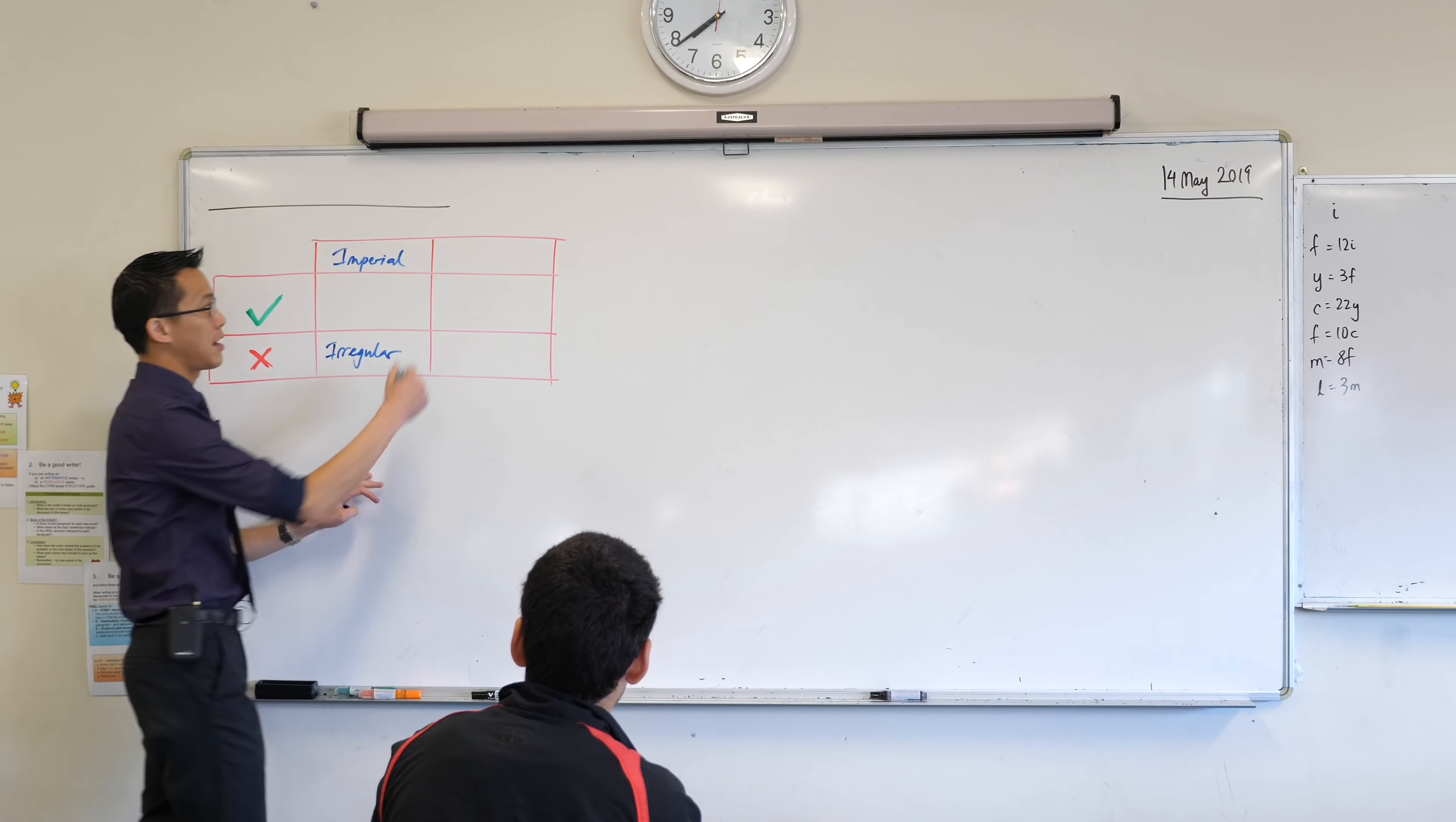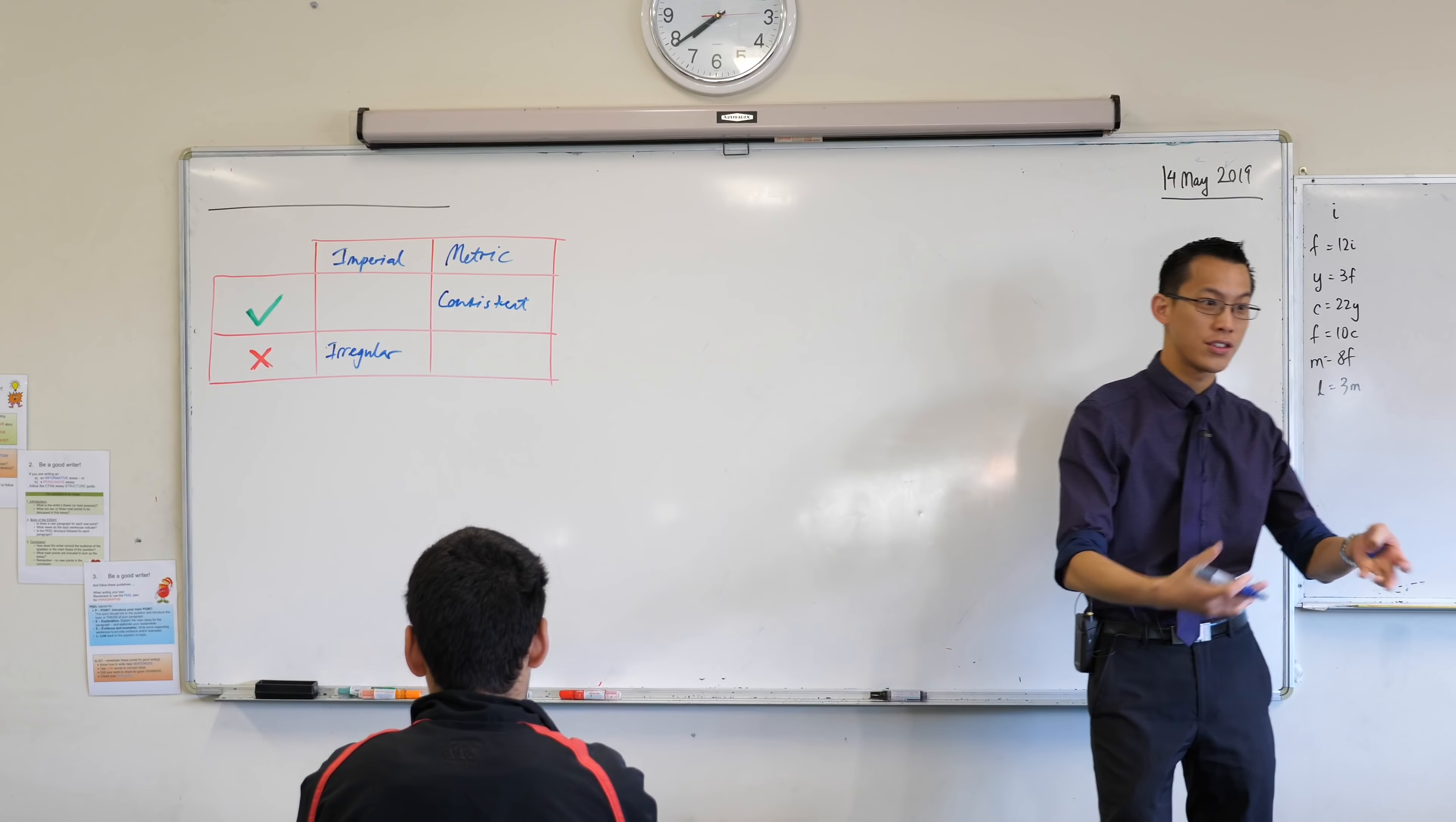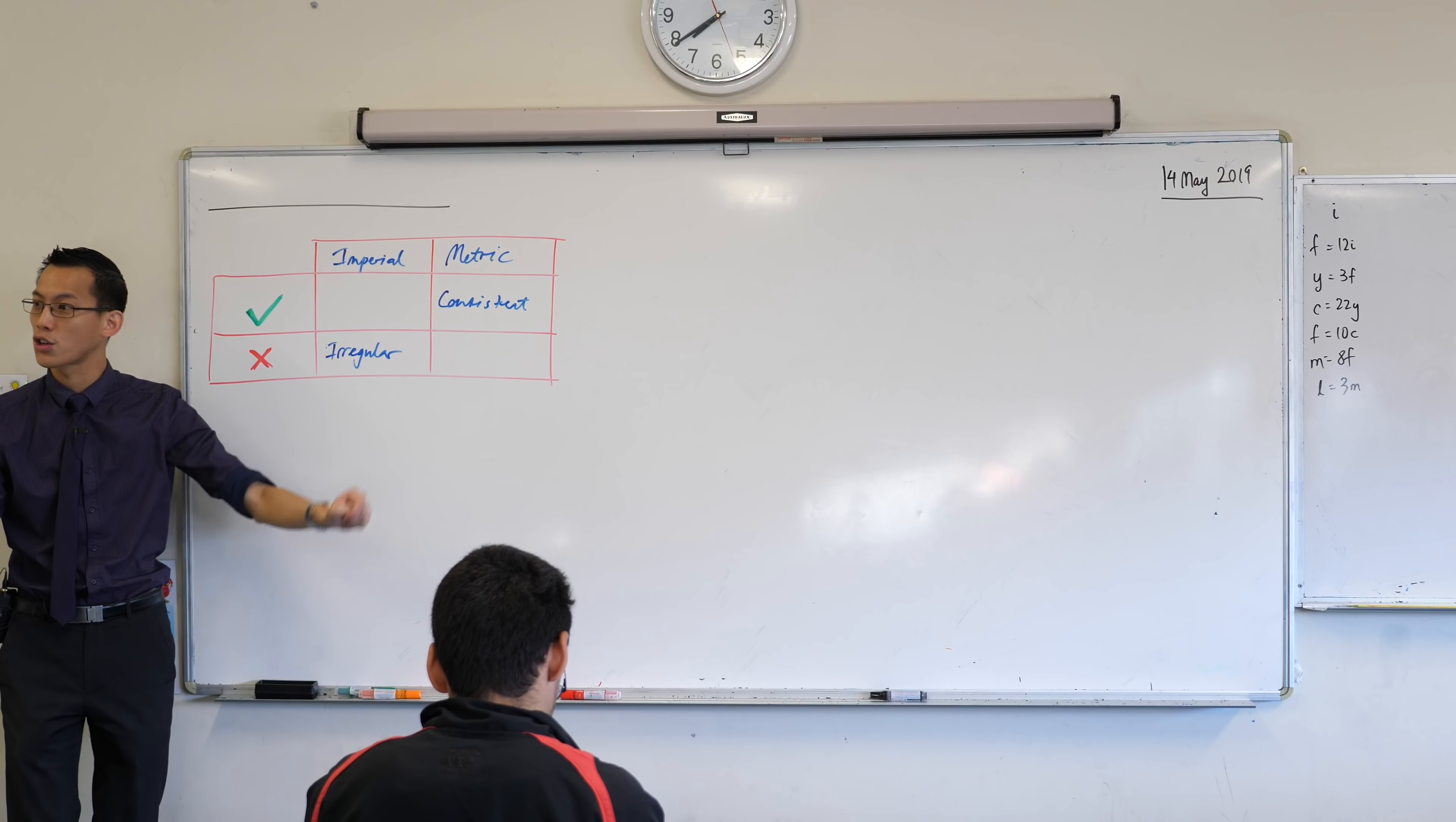So instead we design the metric system right, and the metric system, the whole advantage is that it is not irregular, it's consistent, it's regular all the way up. It's like, oh to get from one unit to the next you're going to multiply by ten or a hundred or a thousand, it's always in powers of ten rather than these random units. But what you need to understand is that it's not like one system is completely superior in every way. Every system is a compromise.